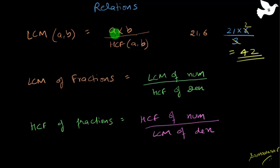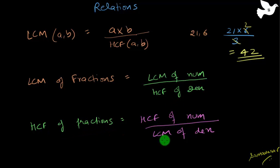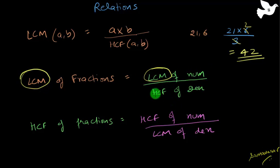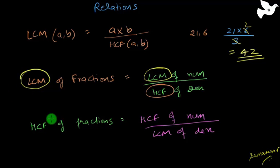What about fractions? If I am finding the LCM of two fractions, that is going to be LCM of the numerators divided by HCF of the denominators. Similarly, HCF of fractions is HCF of the numerators divided by the LCM of the denominators. When finding LCM or HCF of fractions, the numerator always applies the same function — LCM for LCM, HCF for HCF — while the denominator uses the opposite function.